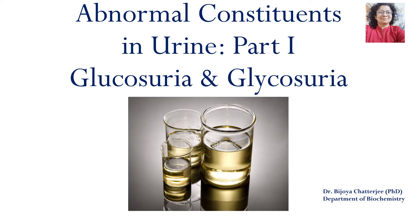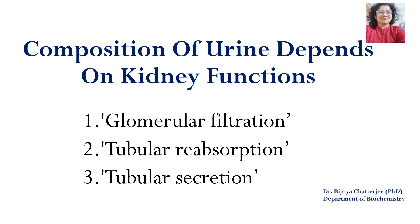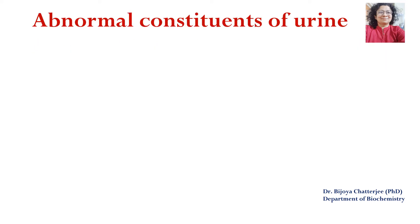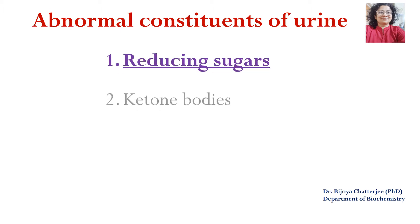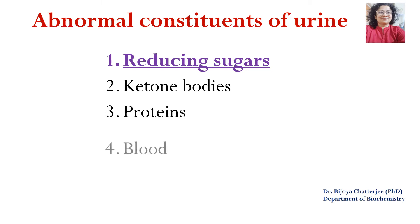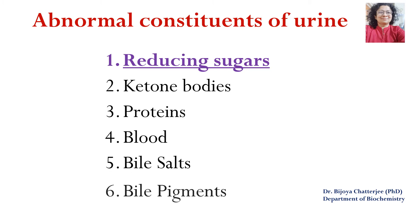Today we will be discussing about glucosuria. The composition of urine depends on kidney functions, which include glomerular filtration, tubular reabsorption, and tubular secretion. Urine is the filtrate of blood carried out by the kidney glomerulus and tubules. The abnormal constituents of urine include reducing sugars, ketone bodies, proteins, blood, bile salts, and bile pigments.